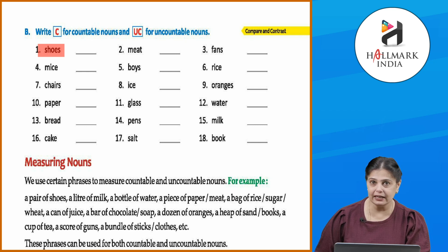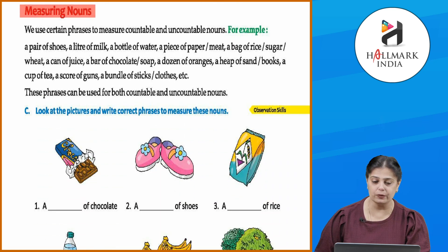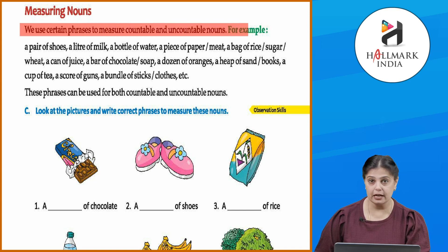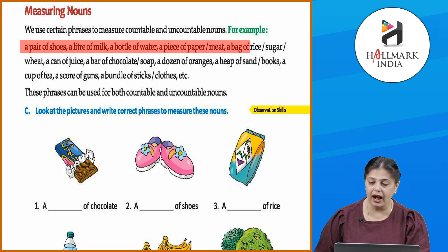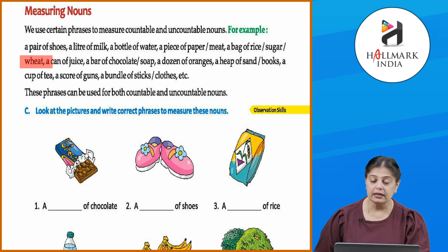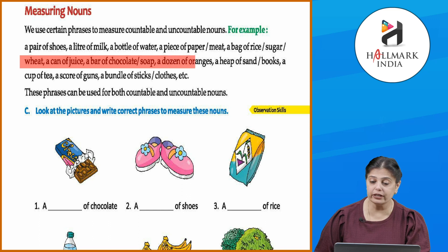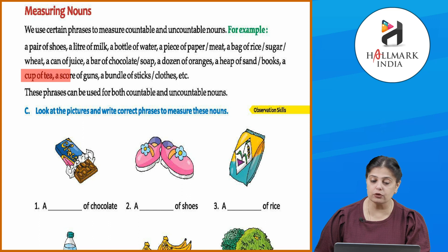Now let's look at the next category: measuring nouns. We use certain phrases to measure countable and uncountable nouns. For example: a pair of shoes, a liter of milk, a bottle of water, a piece of paper or wheat, a bag of rice or sugar or wheat, a can of juice, a bar of chocolate or soap, a dozen of oranges, a heap of sand or books, a cup of tea, a score of guns, a bundle of sticks or clothes.